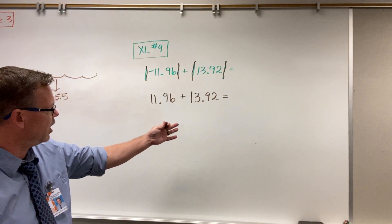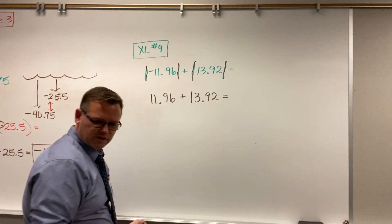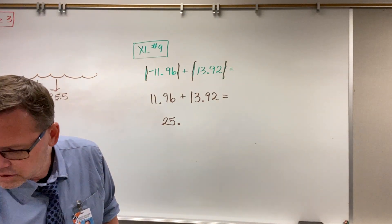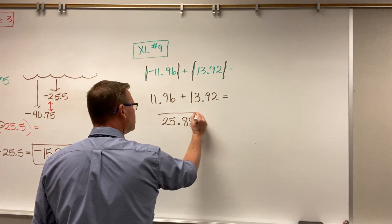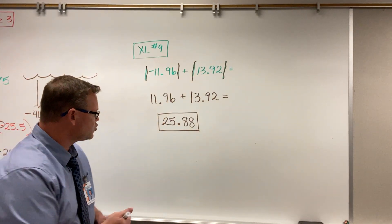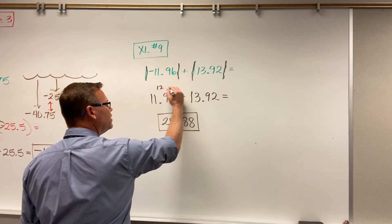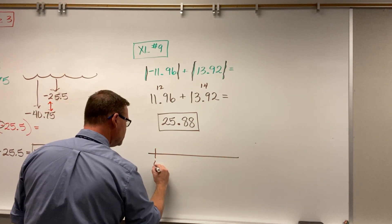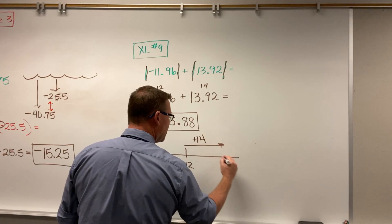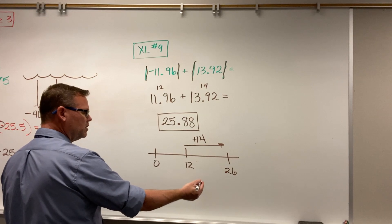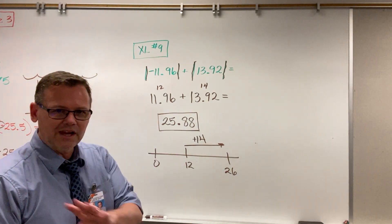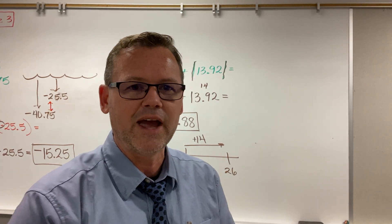We just go through and add these two together on the calculator. We know it's going to be positive. When we add them together, we get 25 and 88 hundredths — that is our answer. Notice how it's positive and larger than both of these because we're adding them together. For the visualization, let's round: say this is 12 and this is 14. We start at 12 and add 14 more, going to the right, and we get 26. That's our estimation. Is our answer close to 26? Yeah, it's really close, so we know we probably have the correct answer. If there's anything you don't understand, make sure you ask me in class. Good luck.